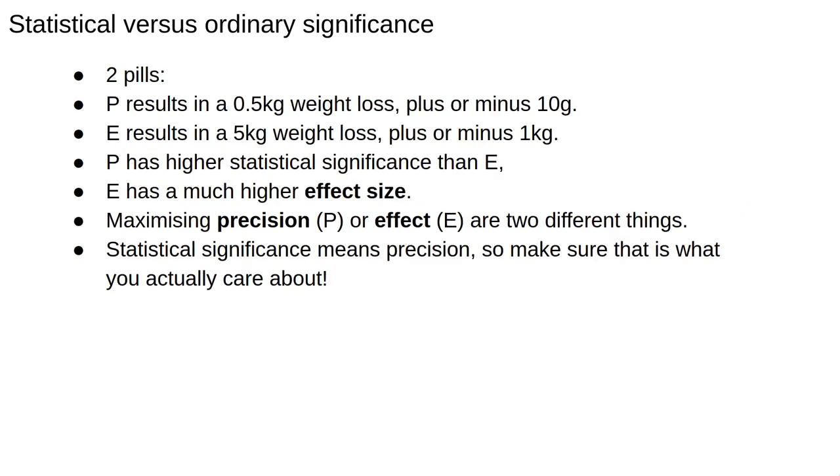To understand the first case, where statistical and practical significance are not the same, imagine two diet pills or weight gain pills, whichever you prefer. Pill P results in a 500 gram weight loss, plus or minus 10 grams, while pill E results in a 5 kilogram weight loss, plus or minus 1 kilogram. If we did an experiment, P would have a much higher statistical significance than E, despite E's much higher effect size.